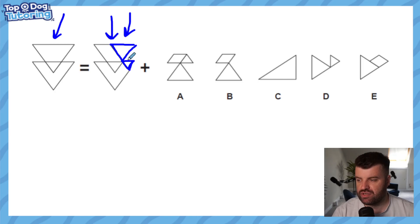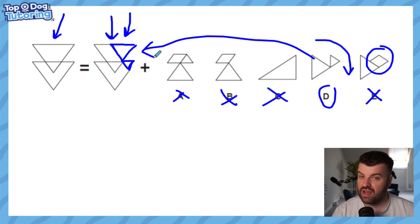As soon as we know it's two triangles that we're looking for we can get rid of A, we can get rid of B, we can get rid of C, and we can actually get rid of E as well because this is not a triangle here. This is too much, therefore D is the only one that works and we can confirm it by rotating at 90 degrees clockwise it would fit perfectly over there.